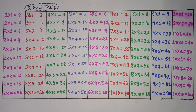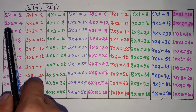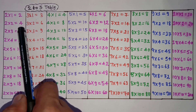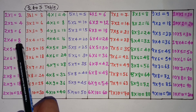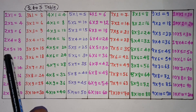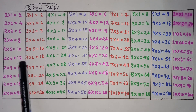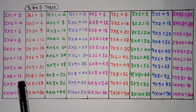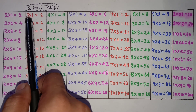2 times table in English. 2 1 is 2, 2 2 is 4, 2 3 is 6, 2 4 is 8, 2 5 is 10, 2 6 is 12, 2 7 is 14, 2 8 is 16, 2 9 is 18, 2 10 is 20.